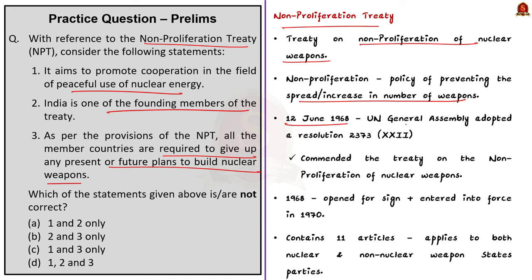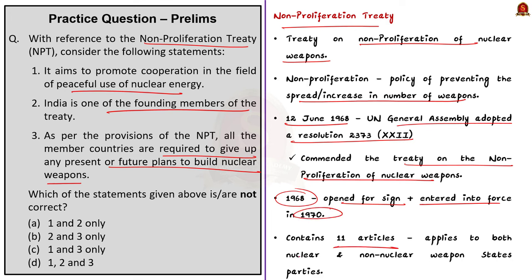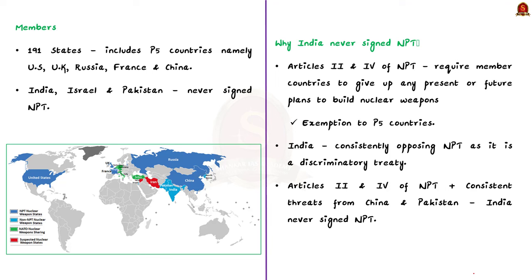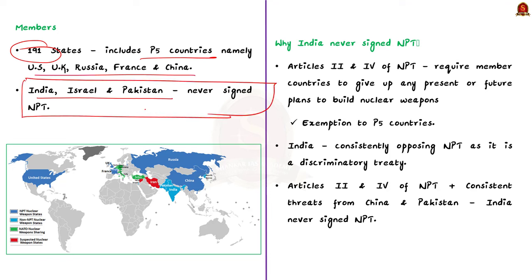On June 12, 1968, the UN General Assembly adopted resolution 2373 commanding the treaty on the non-proliferation of nuclear weapons. The NPT was opened for signing in 1968 and entered into force in 1970. It contains 11 articles applying to both nuclear and non-nuclear weapon states. A total of 191 states have signed the treaty, including the P5 permanent members of the UN Security Council: US, UK, Russia, France, and China. Countries such as India, Israel, and Pakistan have never signed the NPT.